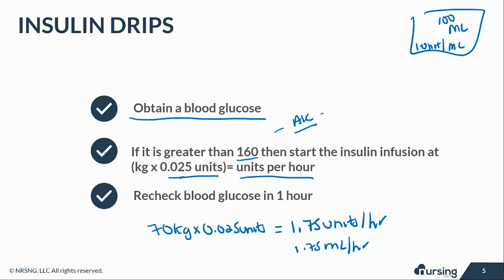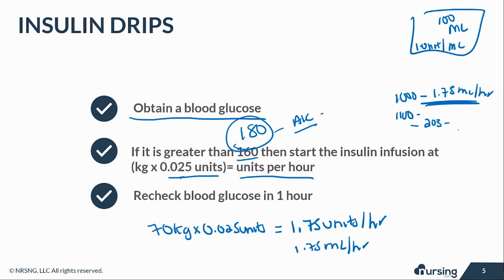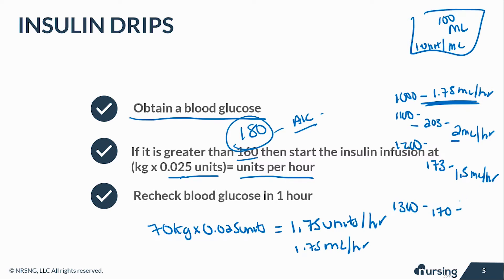Let's say we start this on a patient who weighs 70 kilos and has a blood sugar of 180. We start at 1.75 units per hour at 10 o'clock. At 11 o'clock I come back and check — let's say it's 203. Depending on the protocol, I multiply by a factor like 1.2, so it might change to about 2 mL per hour. At 12 o'clock it's 173, so I decrease it per protocol to maybe 1.5 mL per hour. At 1 o'clock it's 170, and per protocol I may leave it, decrease it, or more likely increase it.